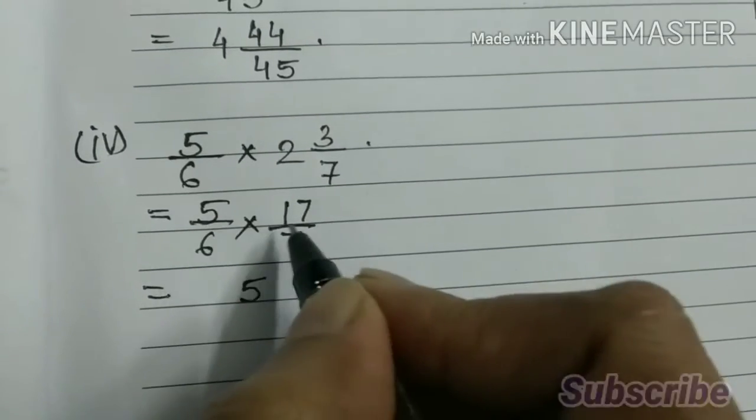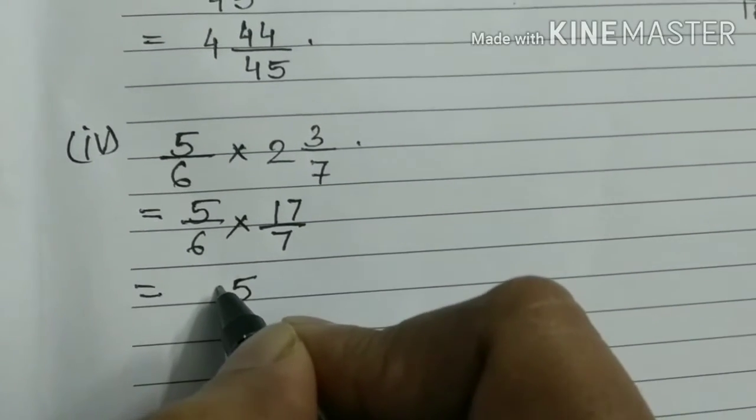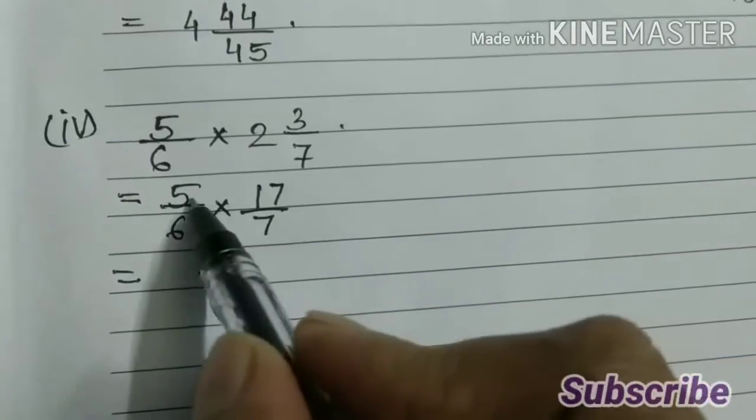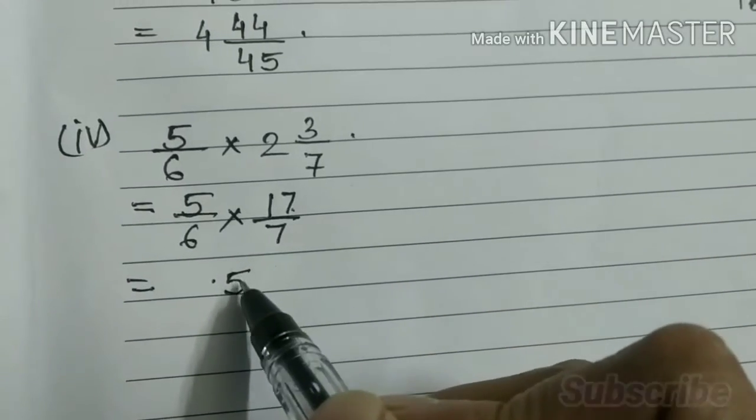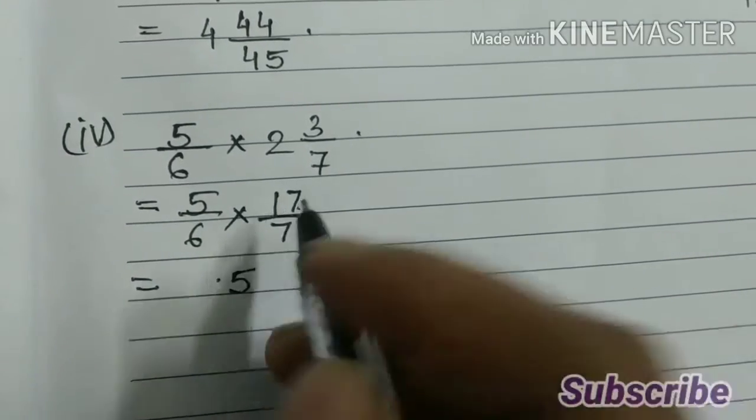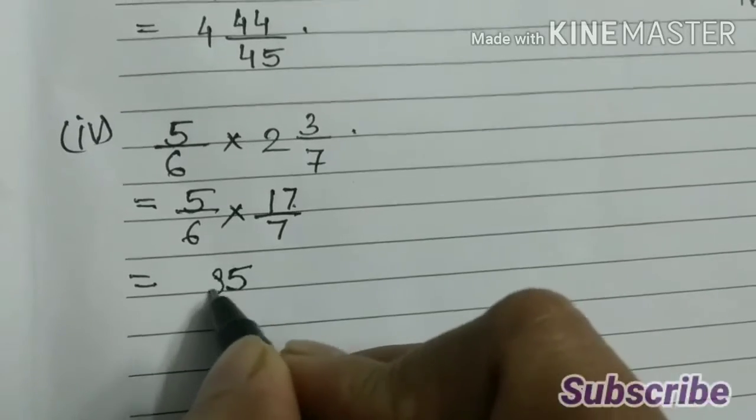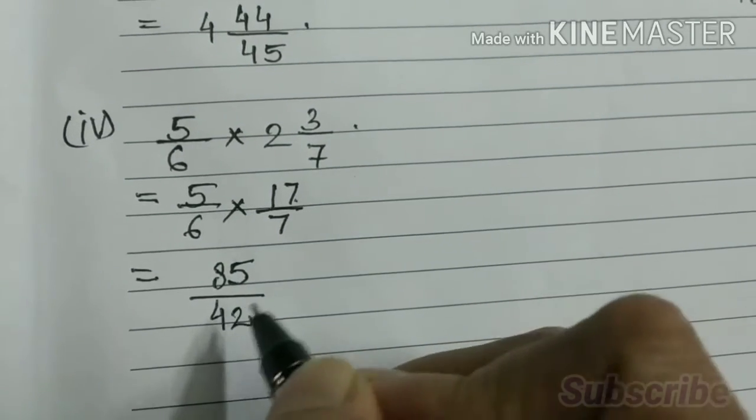5 7s are 35. 5 1s are 5. 6, 7, 85 by 42.